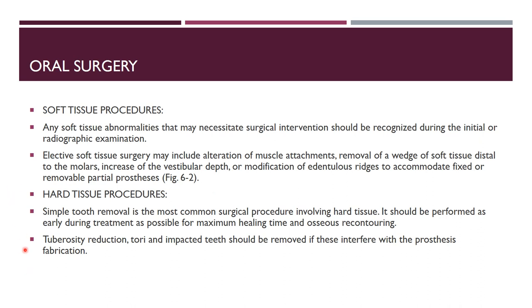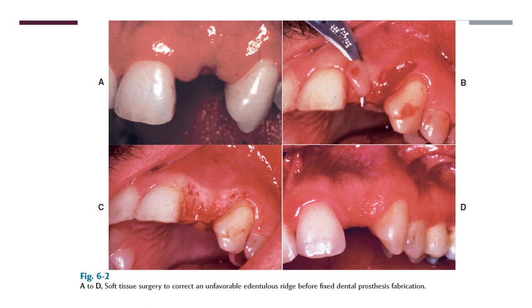Coming to the hard tissue procedures, simple tooth removal is the most common surgical procedure involving hard tissue. It can be performed for maximum healing time — once it's performed, we have to wait for the maximum healing time. If required, osseous recontouring may also be done. Examples here will be tuberosity reduction, tori removals, and impacted teeth removal. Here you can see soft tissue surgery where we are correcting the ridge surface, correcting bulbous areas of gingiva to create space for an FPD.